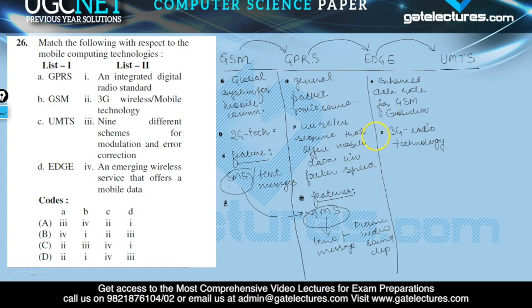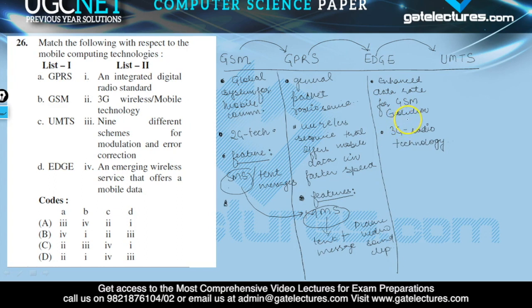EDGE gives users the unique chance to increase throughput capacity and data speeds at least 3 or 4 times compared to GPRS. So GPRS provides higher speed than GSM, and EDGE provides higher speed — increasing throughput 3 or 4 times more than GPRS.